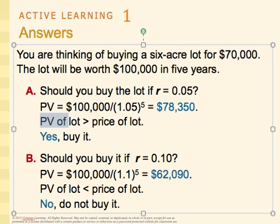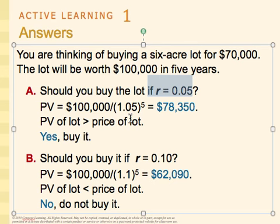What happens is people generally see they're going from $70,000 to $100,000 within five years and think that's great. But in real terms, you have to look at the interest rate and account for opportunity cost and real cost. At 5%, you're making a little over $8,000. At 10%, you're actually losing a little under $8,000. You've got to consider your opportunity cost — remember accounting profit versus economic profit.